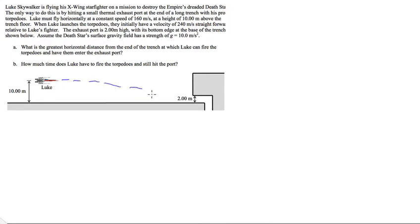So what happens is he fires the torpedoes and they travel in projectile motion. They're going to be traveling horizontally and also falling at the same time. The part that might be a little tricky is this 160 meters per second is Luke's speed going forward, and then the torpedoes launch at 240 meters per second straight forward relative to Luke. That means Luke is going 160, and these torpedoes come out going 240 meters per second faster than Luke.